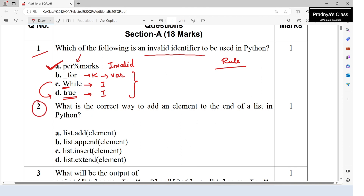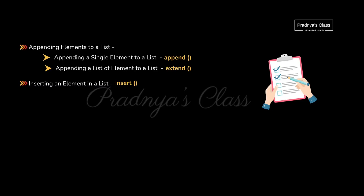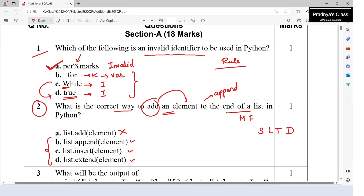The second question asks what is the correct way to add an element to the end of a list. Adding to the end of a list means appending. I suggest writing all functions and methods associated with string, list, tuple, and dictionary on one paper. There is no 'add' method for lists. 'append' adds a single element, 'extend' appends a list of elements, and 'insert' places an element at any position. So the correct choice is B — append.